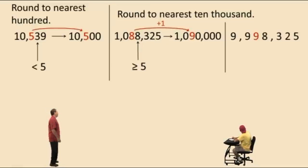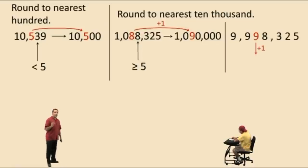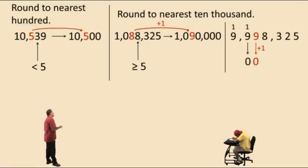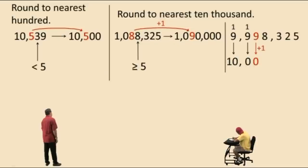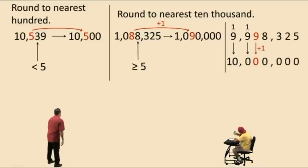Now let's try nine million, nine hundred ninety-eight thousand, three hundred twenty-five, rounding to the nearest ten thousand. The red 9 is in the ten-thousands place. The digit to the right is 8 — greater than or equal to five — so we add one to the 9 in the ten-thousands place. But 9 plus 1 is 10, so we put a zero and carry the 1 to the hundred-thousands place. Nine plus one is again 10 — carry the 1 to the millions place — and nine plus one is ten million. All digits to the right get replaced with zeros. Answer: ten million.